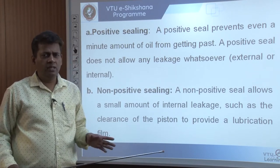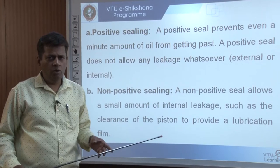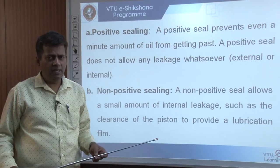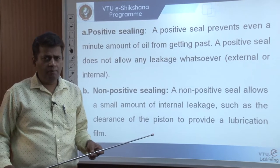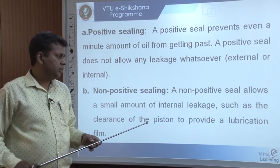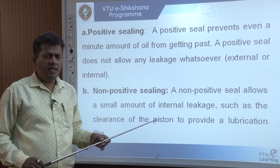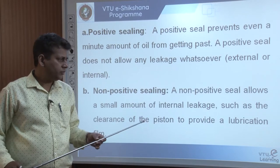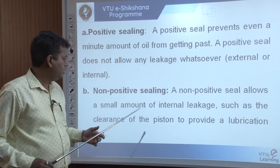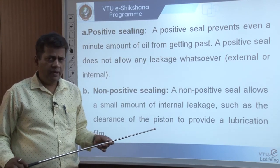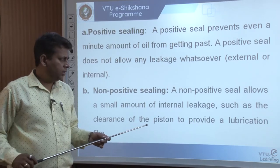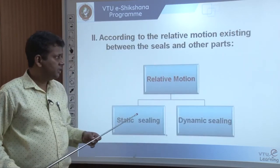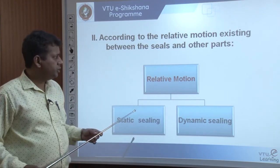Non-positive sealing allows a small amount of leakage intentionally, for purposes like lubrication. For example, if you have an oil hole drilled and oil drips through it, you are intentionally allowing leakage — but that leakage is vital because it lubricates the rotating member. Non-positive sealing rarely occurs in hydraulic and pneumatic systems but is employed in industries involving high-pressure fluids like oil or air.